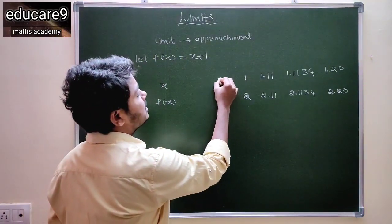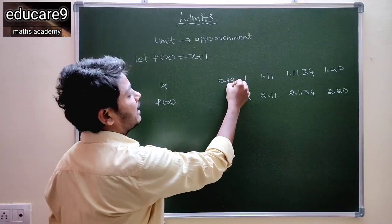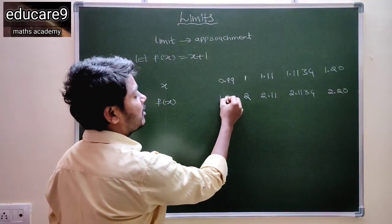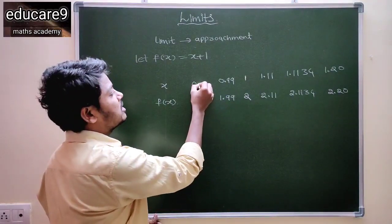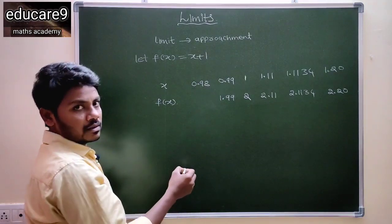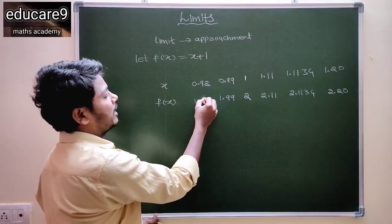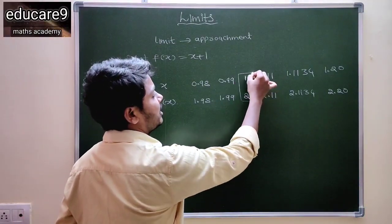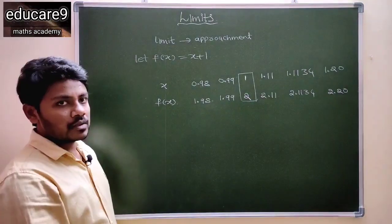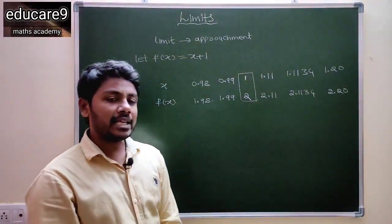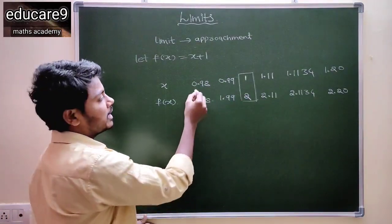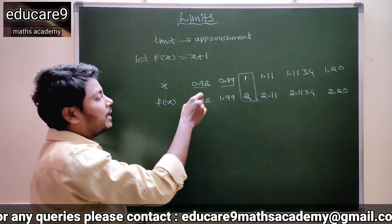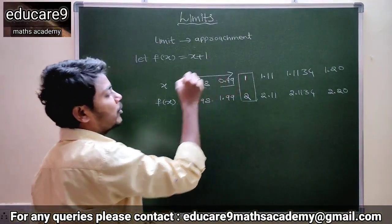For example, if x is 0.99, then f of x value is 1.99. For example, if x is 0.98, then f of x value is 1.98. So, if x is equal to 1, then f of x value is 2. Once you observe here, the x values are approaching 1. So x values 0.98 and 0.99 approach 1 from the left side.